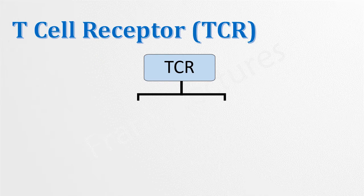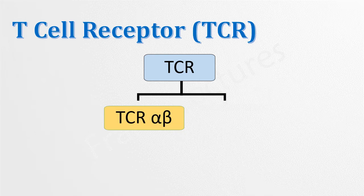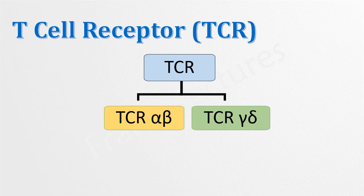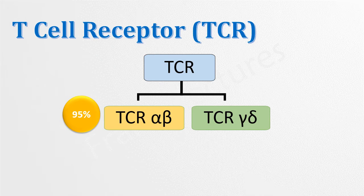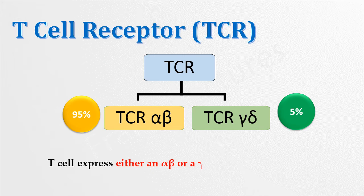There are two types of T-cell receptors and both are heterodimers. The first is TCR alpha-beta and the second is TCR gamma-delta. 95% of T-cells circulating in the body have TCR alpha-beta, and 5% have TCR gamma-delta. A T-cell expresses either the alpha-beta receptor or the gamma-delta receptor, but never both.